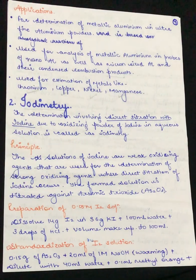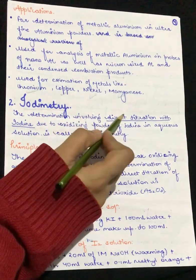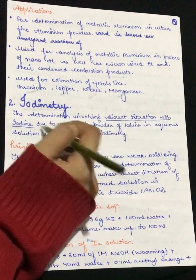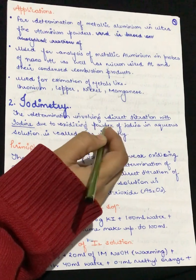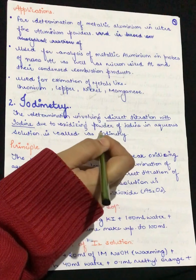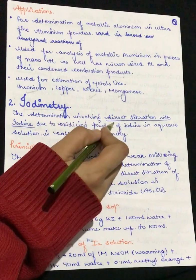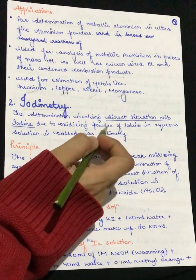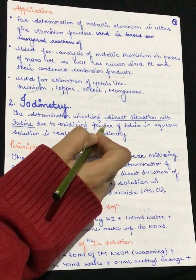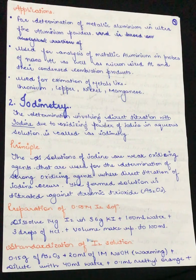The determination that involves direct titration with iodine, due to the oxidizing power of iodine in aqueous solution, is called iodimetry. This is the definition: if there is oxidizing power in iodine, then because of the direct titration we are going to do the determination in aqueous solution — that is iodimetry.